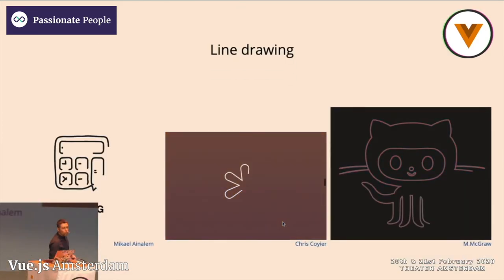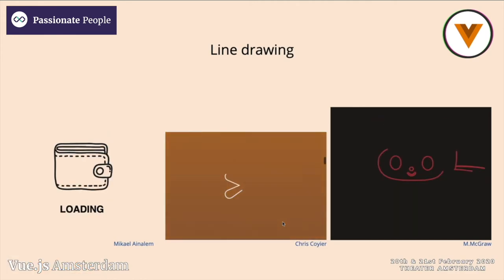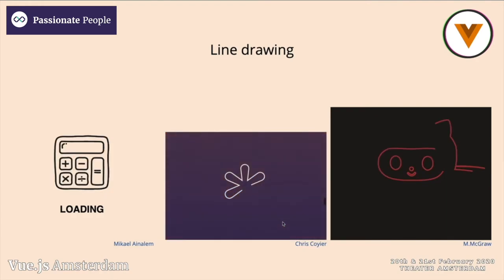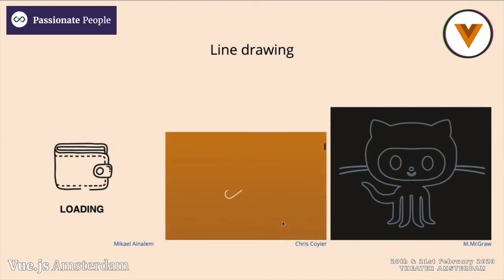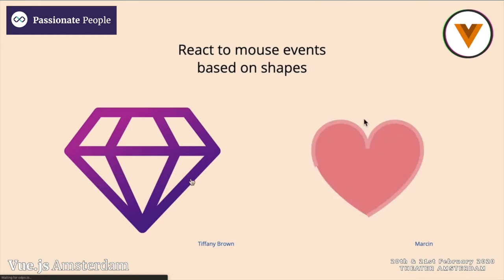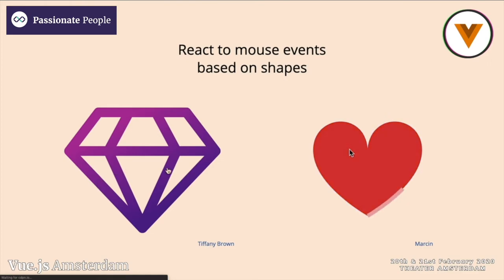We can do the line drawing effect. I'm pretty sure all of you are familiar with many variations of this. The middle one is actually an example where the line drawing is connected to the scroll bar — while you scroll the page, the line fills in. We can also react to mouse events based on shapes. On the left example with the diamond, when hovering the SVG, the mouse is only affected when it's on a path — the anchor tag wraps the path itself — so there's no bounding box triggered when you want to hover only on the path.